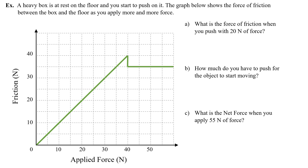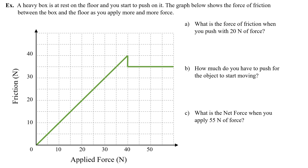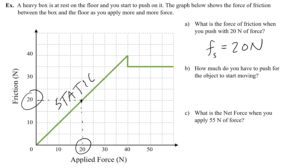A heavy box is at rest on the floor and you start to push it. The graph shows friction versus applied force as you apply more and more force. Part A asks: what is the force of friction when you push with 20 newtons? When you apply 20 newtons, you are still in the static section — the varying, changing force represents static friction. Since static friction equals the applied force, Fs equals 20 newtons.